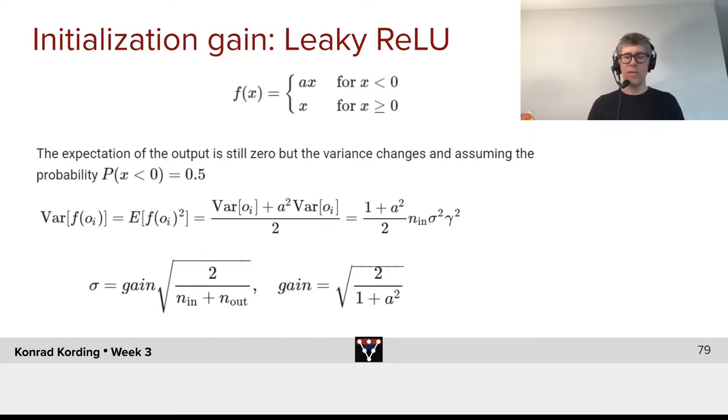Now what we can do is pull out the (1 + a²)/2 term. So we have that variance equals (1 + a²)/2 times n_in times σ² times γ². σ² is the variance of the presynaptic activity and γ² is the variance of the weights.